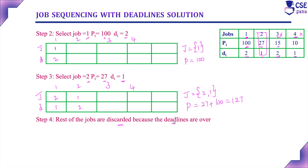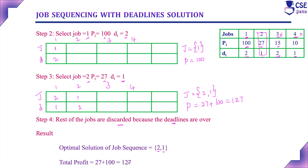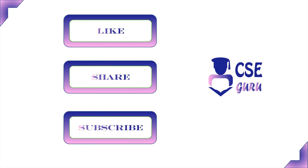We have now completed this problem. The optimal solution is: first assign job 4 (original job 4, profit 27) and then job 1 (profit 100) to the computer for execution. The total profit earned is 127. This is the solution for the given job sequencing problem. Thank you for watching this video.